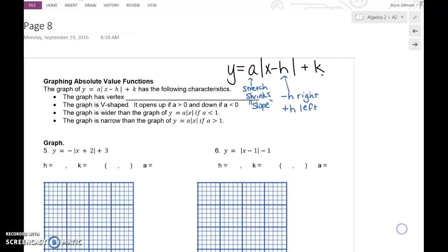k is responsible for the vertical movement, the up and down movement, and it's perfectly normal. So plus k moves the function up, and minus k moves the function down.